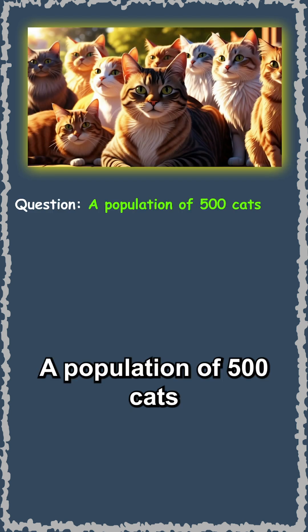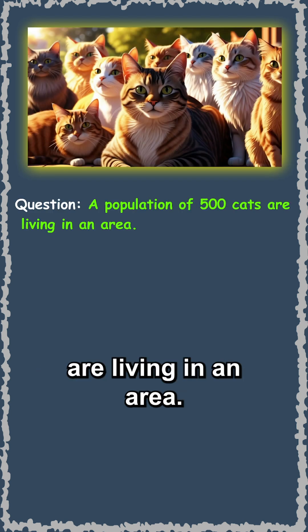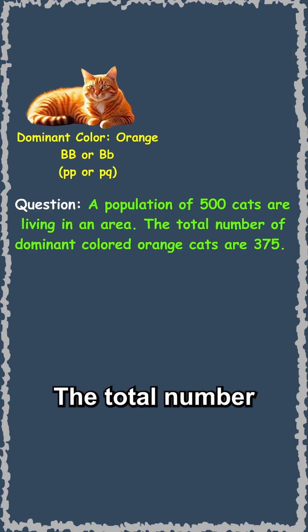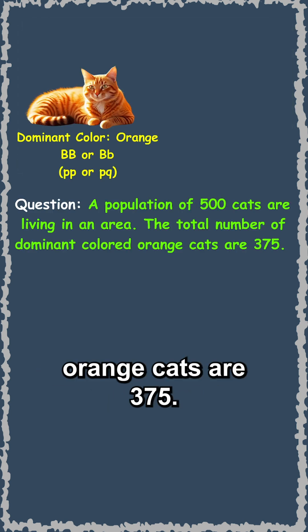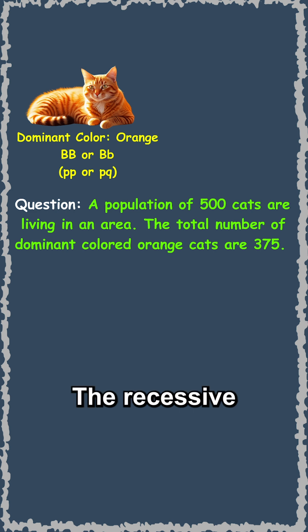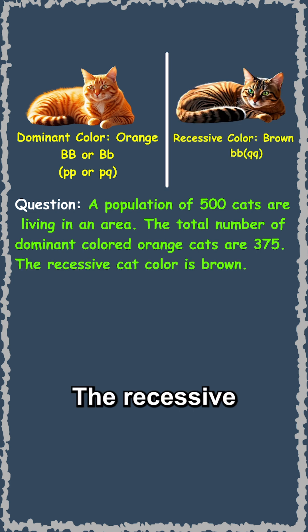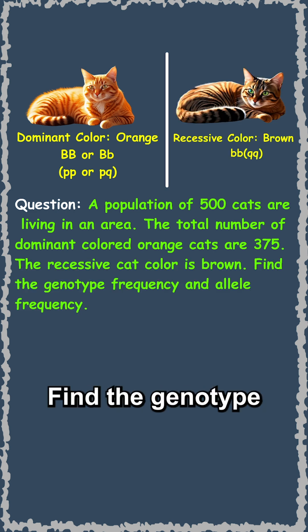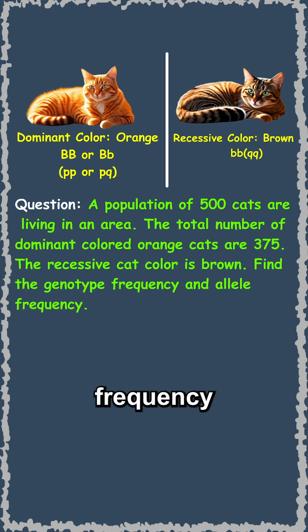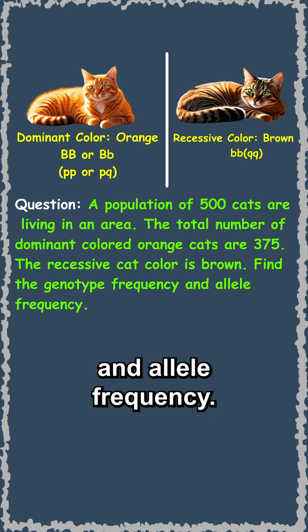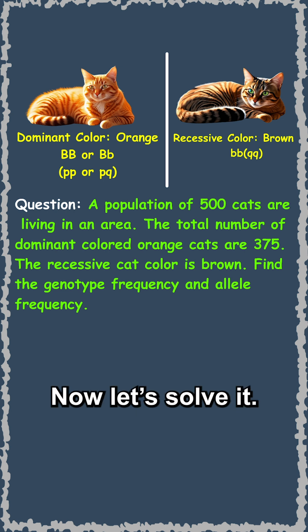A population of 500 cats are living in an area. The total number of dominant colored orange cats are 375 and the recessive cat color is brown. Find the genotype frequency and allelic frequency.